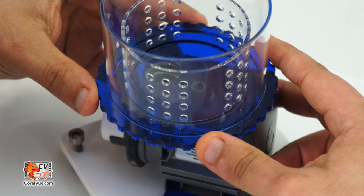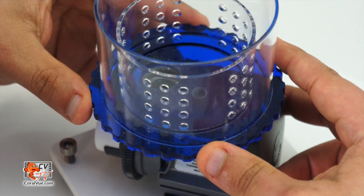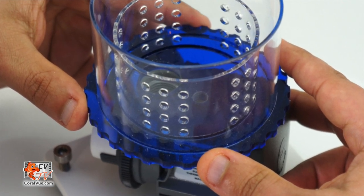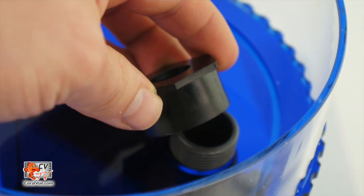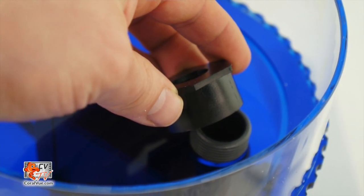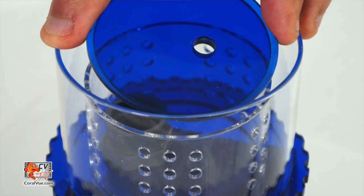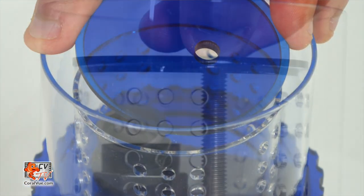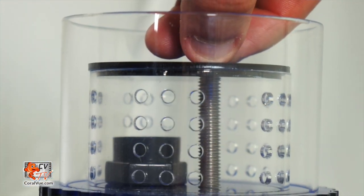With the top of the diffusion chamber removed, place the output of the pump through the hole in the bottom plate. Thread in the output adapter to secure the chamber to the output of the pump. Place the top of the chamber and thread the screw and be careful not to over tighten.